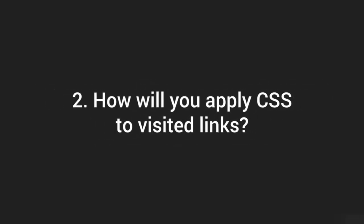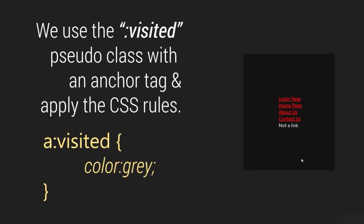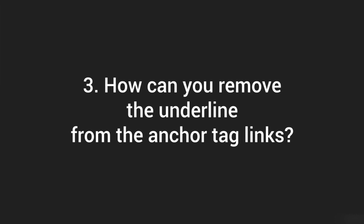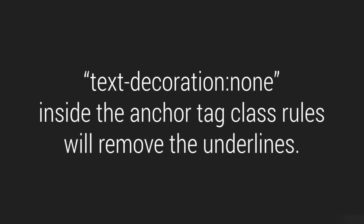Second question: how do you apply CSS to visited links? Use the ':visited' pseudo-class with an anchor tag — once a link is visited, the CSS rules configured with ':visited' are applied. Third question: how do you remove the underline from anchor tag links? Use 'text-decoration: none' — assigning none to text-decoration removes underlines from anchor tags.